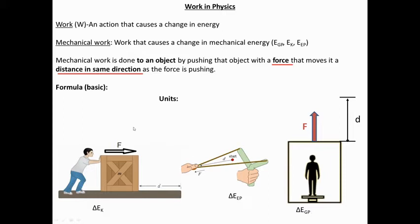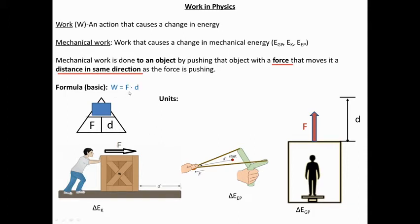If we want to look at the formula, here's a formula triangle. We cover up the variable we want to solve for to rearrange the equation. To find work, we cover up work — the remaining two items are next to each other, so we multiply. Work equals force multiplied by distance moved. Remember, it's not how far it is away from you — it is the distance it has moved while you're exerting that force.